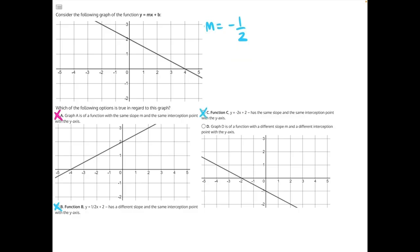Answer choice D says graph D is of a function with a different slope m and a different interception point with the y-axis. The interception point is different - it's at negative 1 here when it's at positive 2 in our original. But how can we tell if the slopes are the same? Again, we'll have to pick two points on this graph.